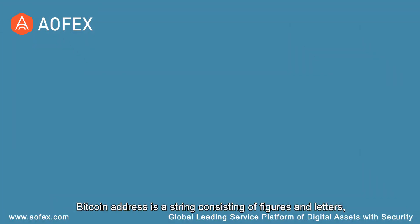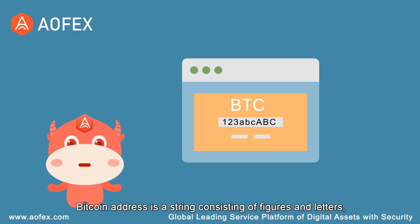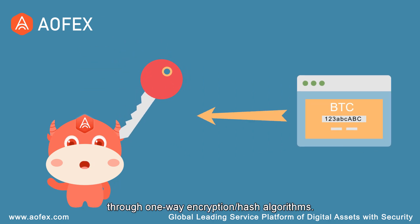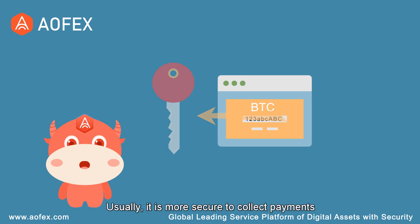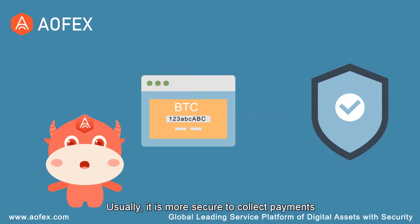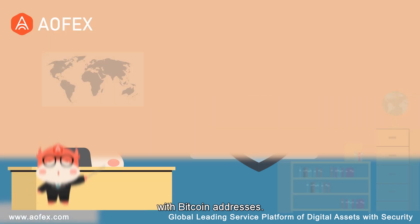Bitcoin Address is a string consisting of figures and letters and can be obtained by a public key through one-way encryption or hash algorithms. Usually it is more secure to collect payments with Bitcoin addresses.